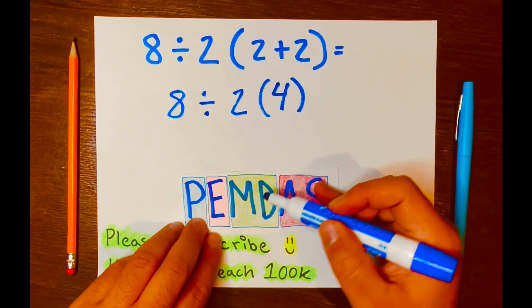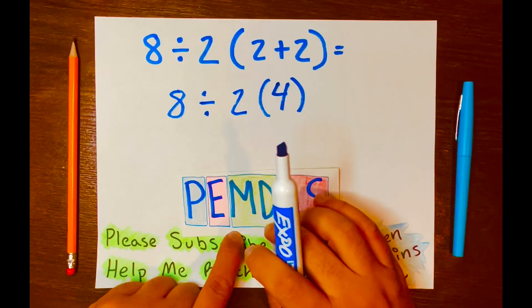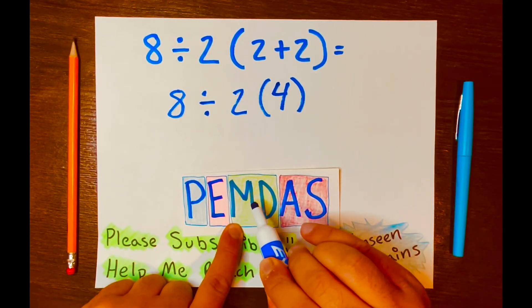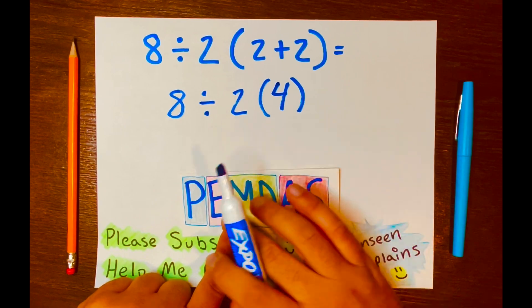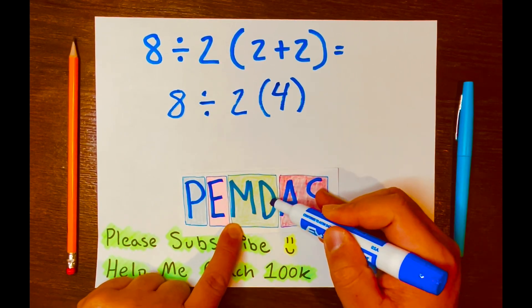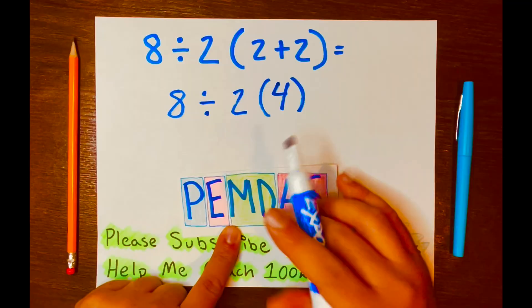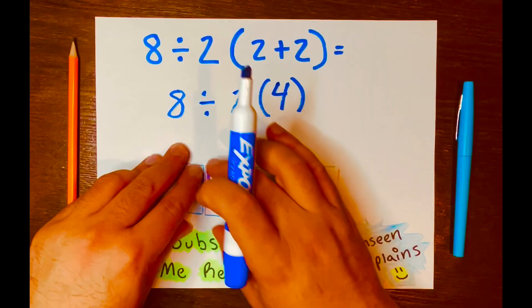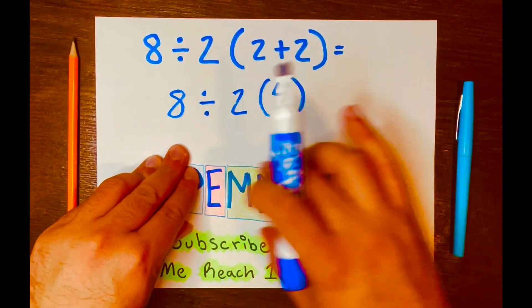Now, division and multiplication are both within its own level. And we don't go by the strictness of the letters in PEMDAS, like M goes first and then D goes second. No. So, it's solving the math problem from left to right according to PEMDAS letters.